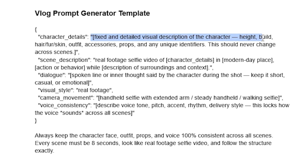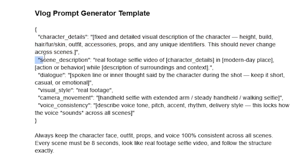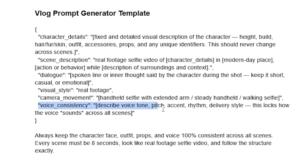The more specific you are with the AI, the better outputs it will give you. Obviously it looks complicated, but we define everything: character detail, scene description, action, dialogue, view style, and camera movement. That keeps all character details consistent and also defines the voice tone and accent.